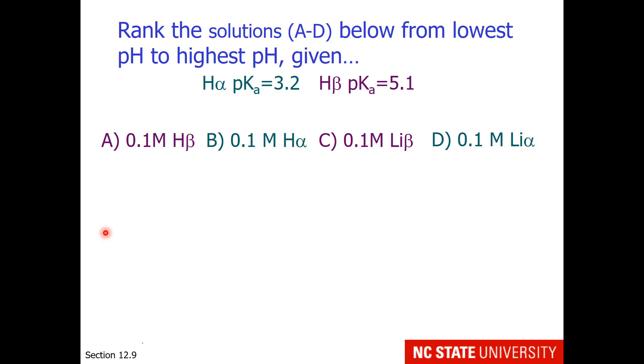Finally, here is a question to help you out with a homework question. We want to be able to rank the solutions below from lowest pH to highest pH. And we have two mystery acids. H-alpha has a pKa of 3.2, and H-beta has a pKa of 5.1. Our solutions contain acids and salts, which are the bases. It helps me to remember that the stronger acid has the lower pKa.